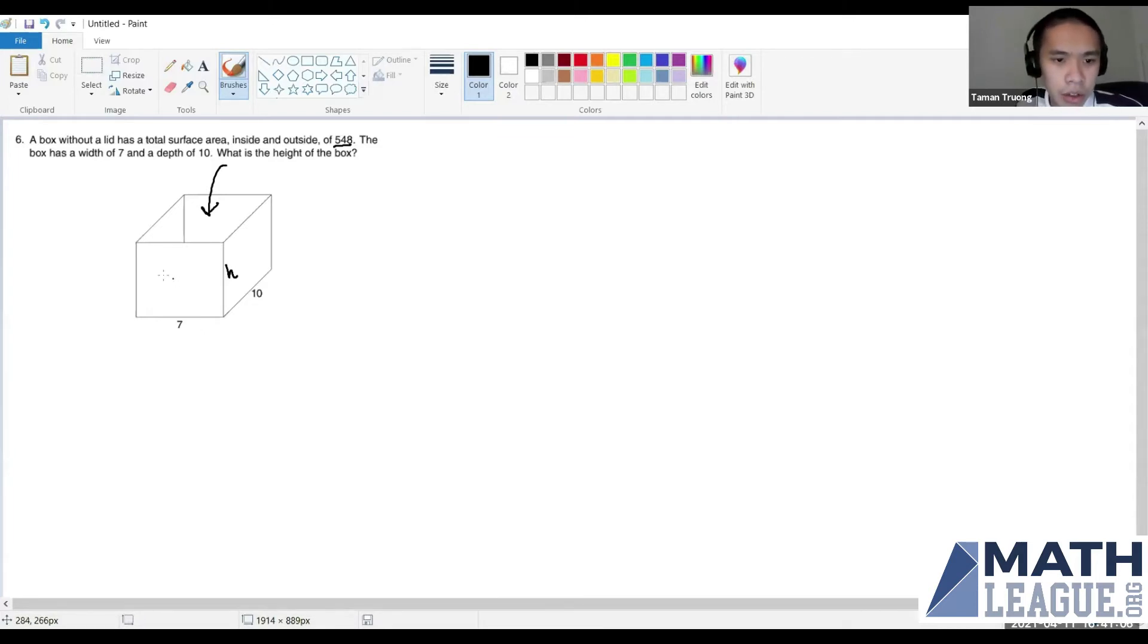And so we see that there's a seven h here, seven times h. That's the area of this first face. And then this face is also equivalent. We have a 10h here, and this face is also equivalent. So there's two faces that are 7h and 10h. So we can rewrite the sum as 2 times 7h plus 10h.